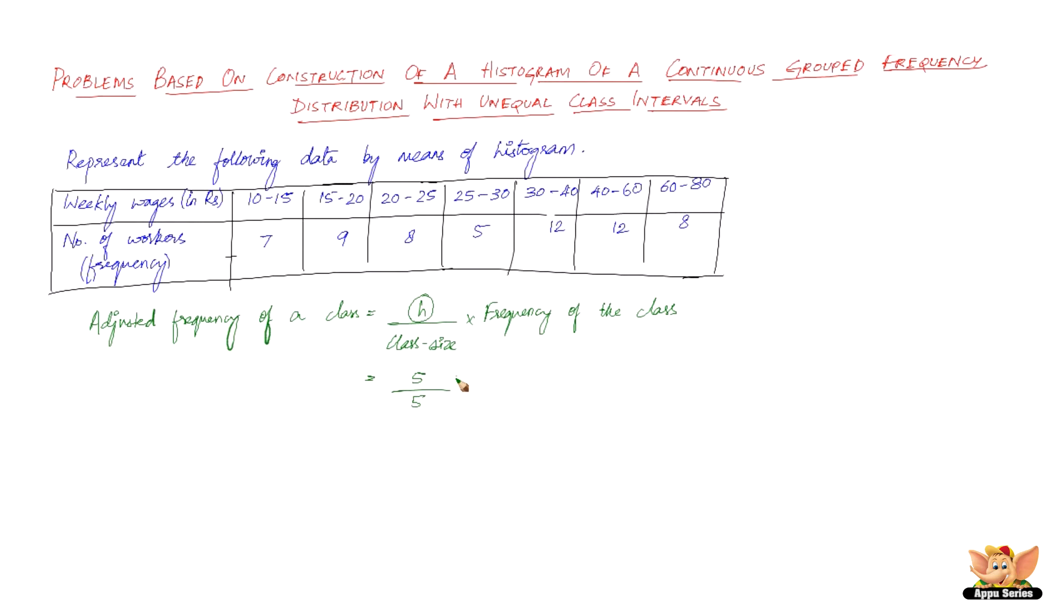So choosing the first one, we get 5 by 5 and the frequency of the class is 7. So we have 7 here. This frequency is fine because we are taking the frequency with reference to the size of the class interval 5. So here we have no problems. Similarly, let us find out the adjusted frequency for each of the observations. So 10 to 15 is 7. So 15 to 20 also it's going to be 5 by 5 into 9. Therefore it's going to be 9. So 5 by 5 into 9 which is going to be 9. This is for 15 to 20.